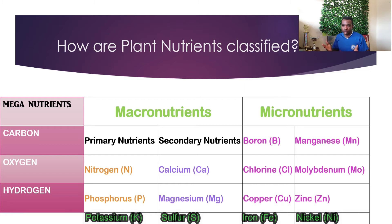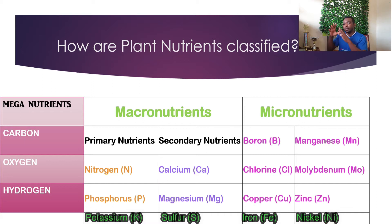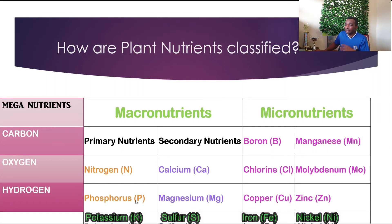Moving on to macronutrients — remember we said that under macronutrients we have primary and secondary macronutrients. Primary macronutrients are the ones you've been hearing about on my channel: NPK — nitrogen, phosphorus, and potassium. In previous videos I told you that these are the three main nutrients you will see on fertilizer bags, because these are the minerals that plants use in the largest quantities.